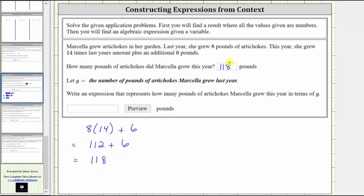Now we're told to let G equal the number of pounds of artichokes Marcella grew last year. Write an expression that represents how many pounds of artichokes Marcella grew this year in terms of G. So for the first part of the question, we were told Marcella grew eight pounds of artichokes last year, which is this amount here. And now we're told to let this amount be equal to the variable G.